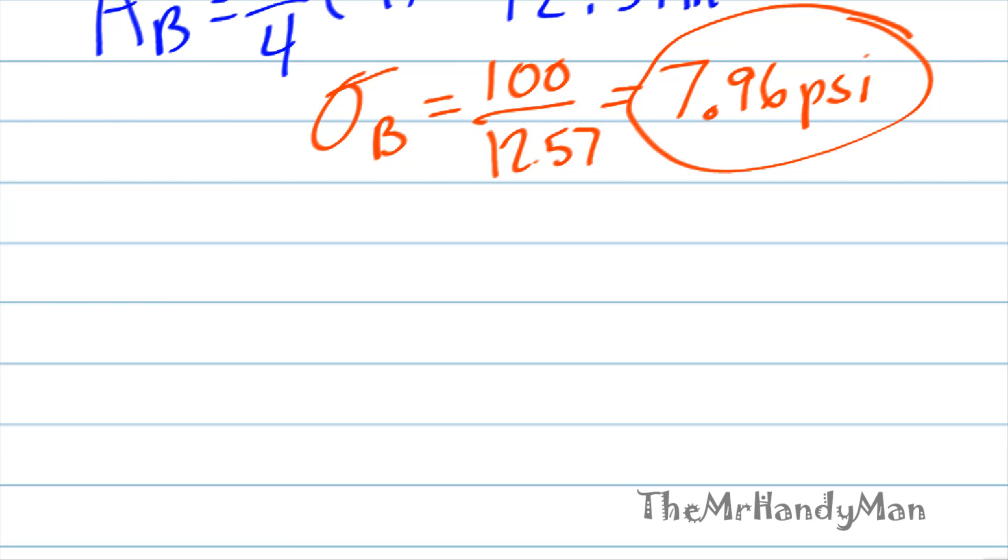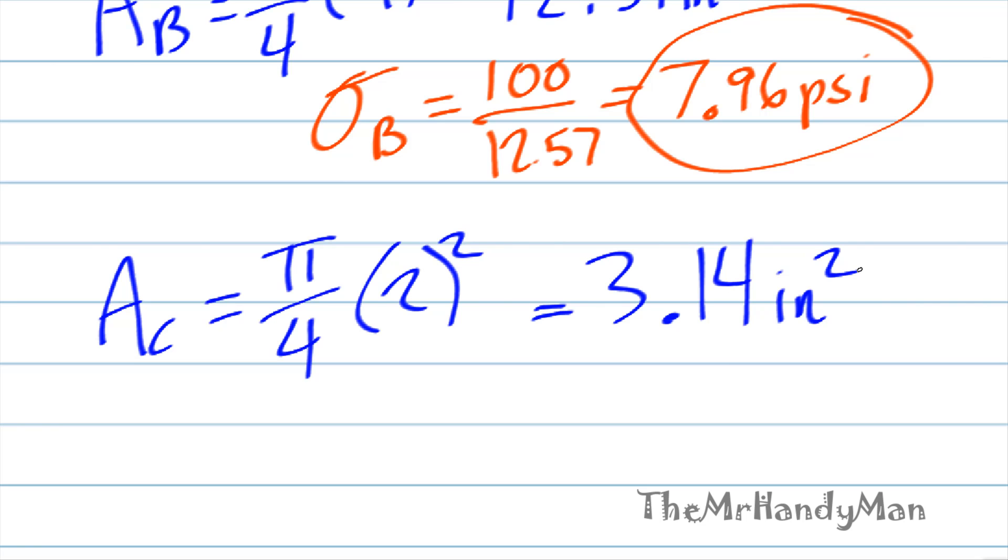Continuing even further to our final cross-sectional area, cross-sectional area C, which is going to be pi over four, once again, two squared. That surface area is going to be 3.14 inches squared. When we calculate that out, 100 over 3.14, which equals 31.83 psi.